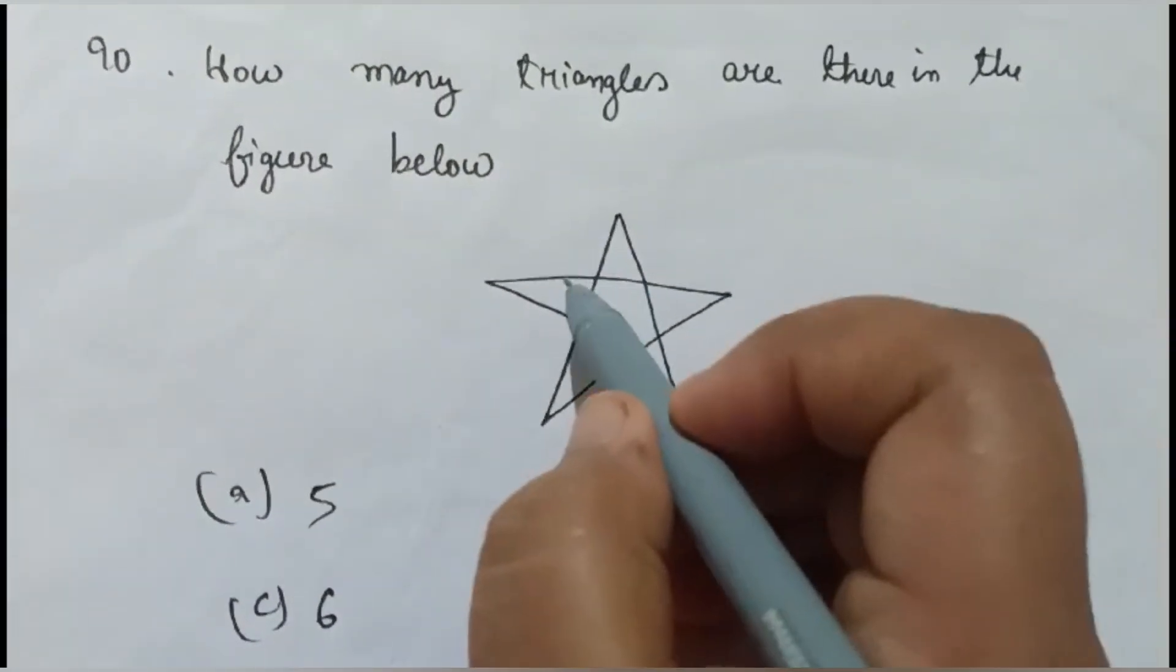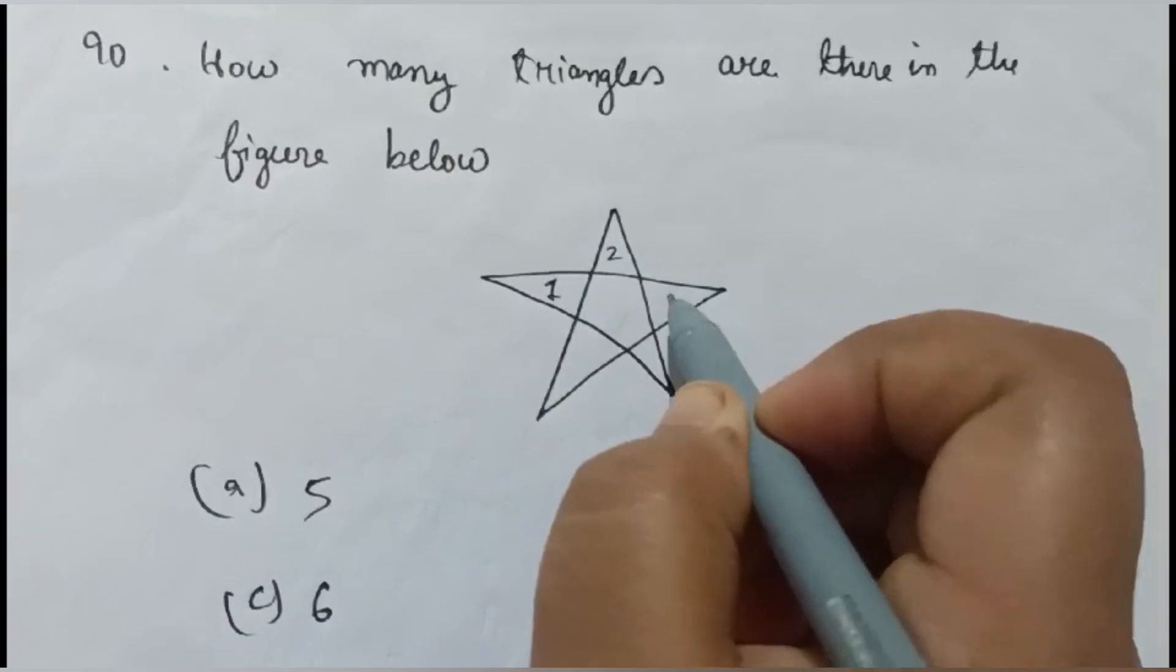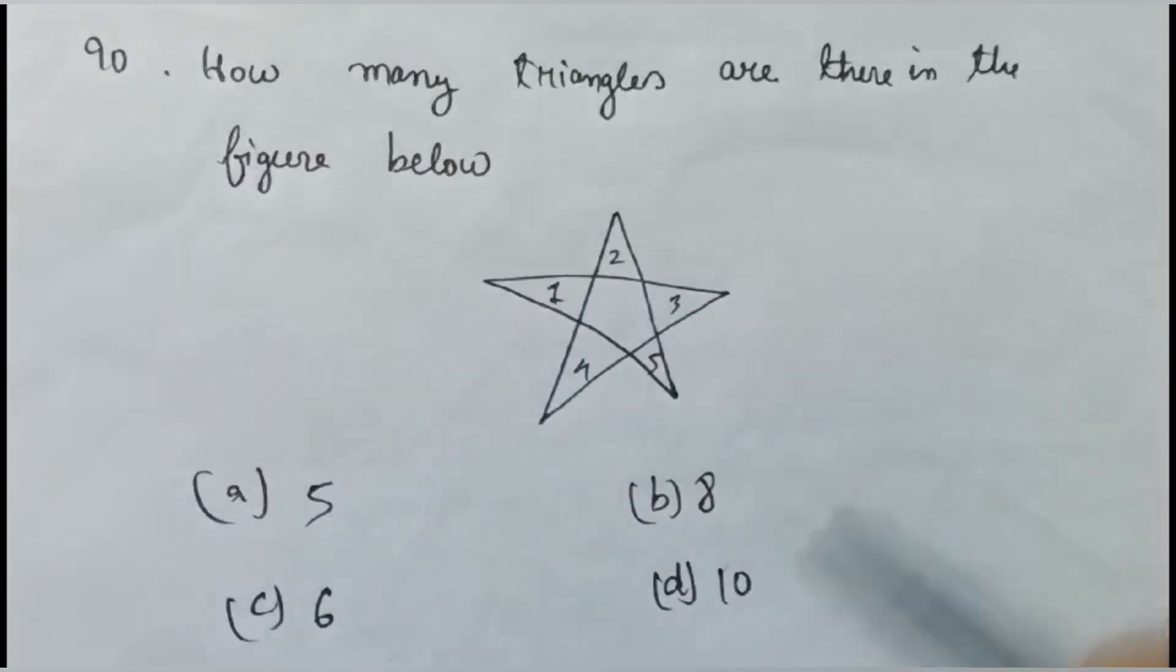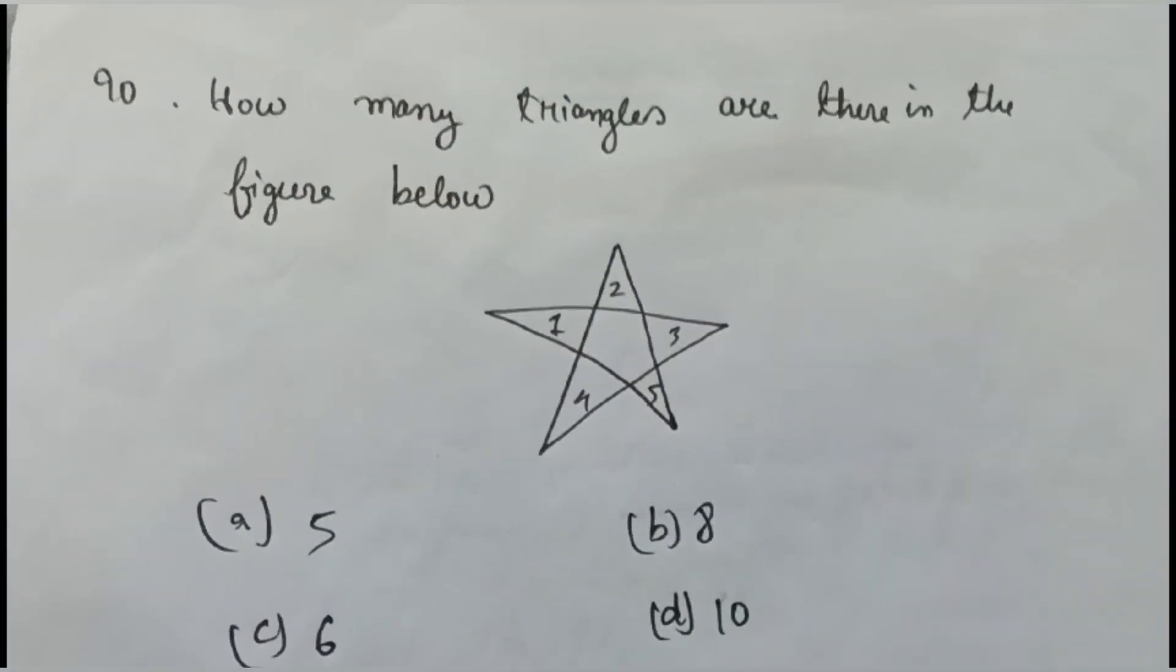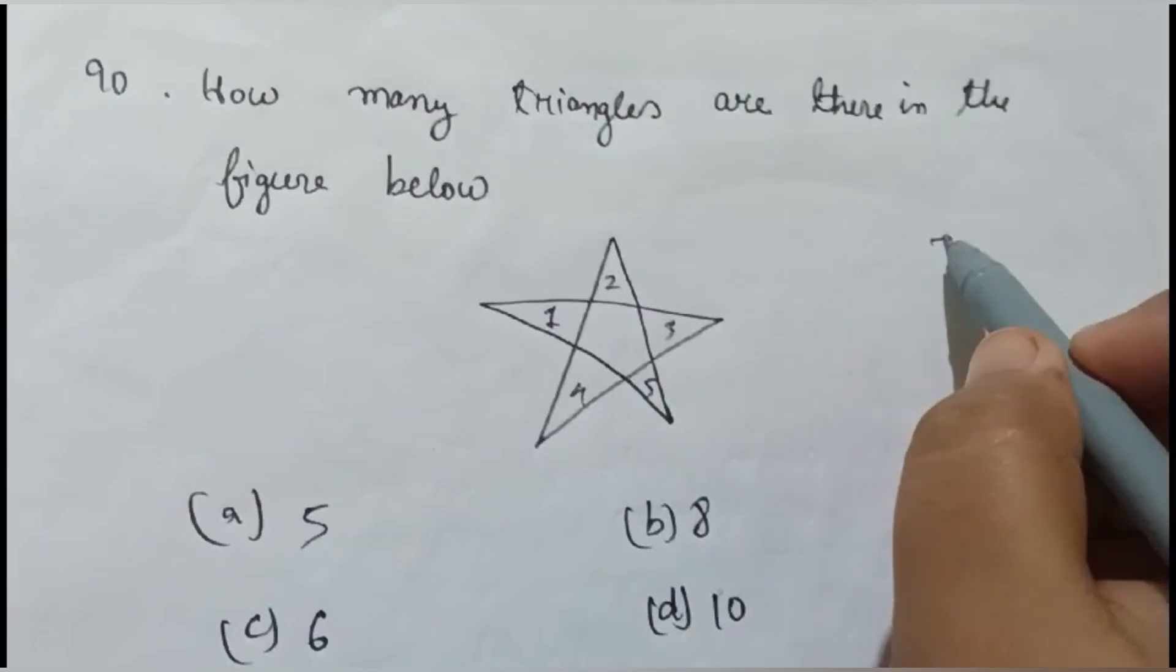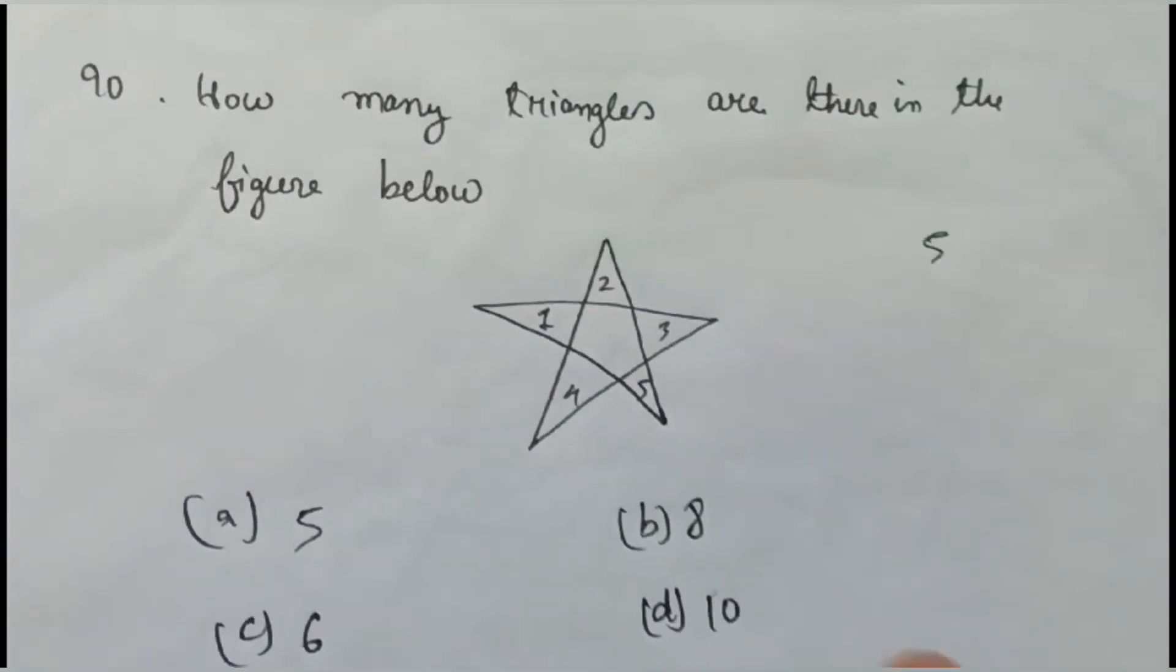So we will do like this: one, two, three, four, five. These are the small triangles, here are five. We will write like this. Now there are also other triangles we have to find out.